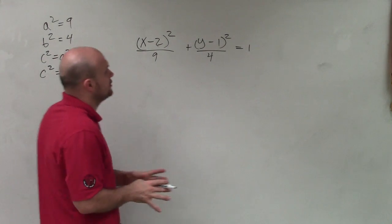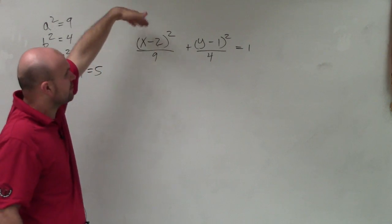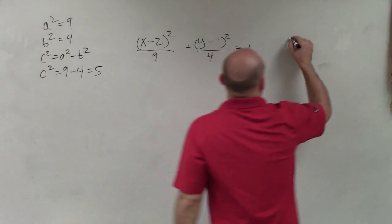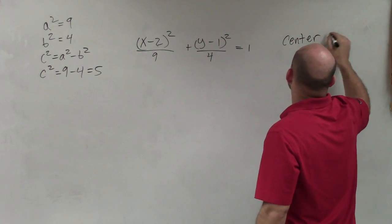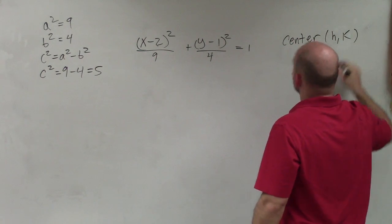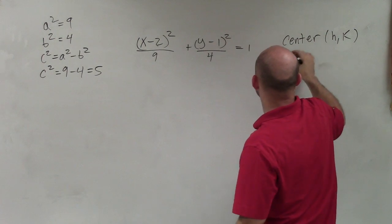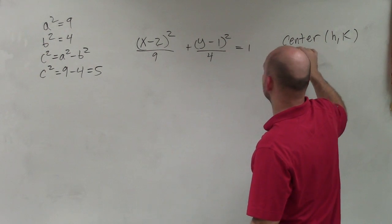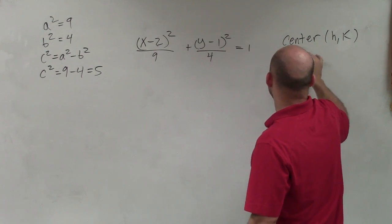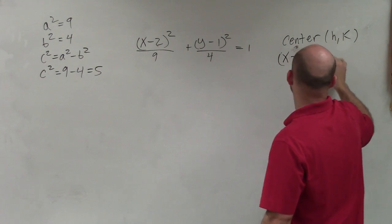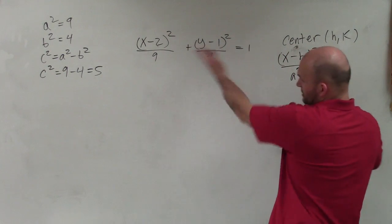In the standard form of the equation, you can see that my center is always going to be at (h,k). So in this case where the center is (h,k), it's going to be (x-h)²/a² which in this case is 9.